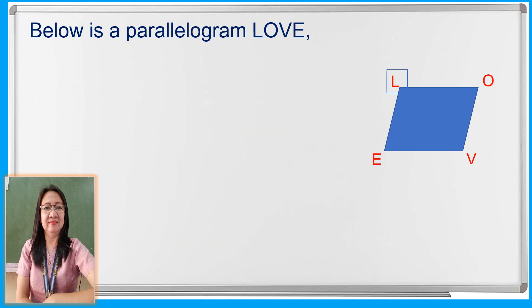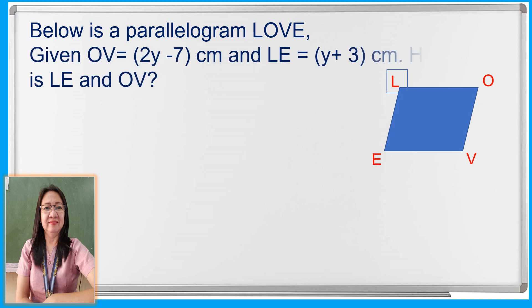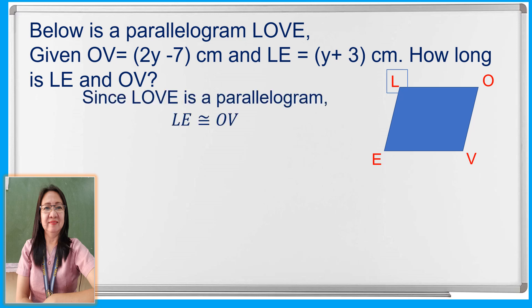Let us consider again the parallelogram L-O-V-E. This time, side O-V is given as 2y minus 7 centimeters, and side L-E is y plus 3 centimeters. How long are sides L-E and O-V? Similarly, the opposite sides of a parallelogram are congruent, so L-E is congruent to O-V.